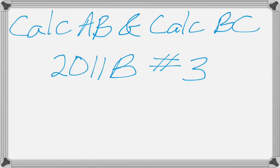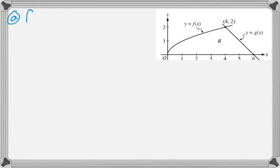Alright, this will be number 3 from the Calc AB and BC Form B exams in the year 2011. It's kind of an area-volume-y type of question. We're given the graph. We're told that f of x is radical x and g of x is 6 minus x.